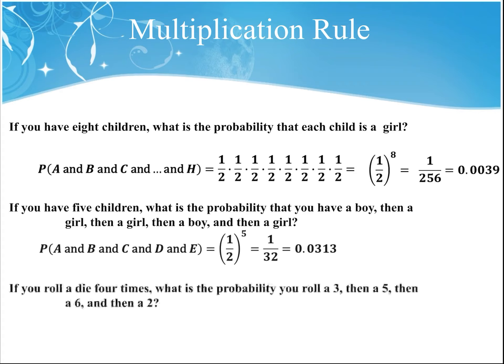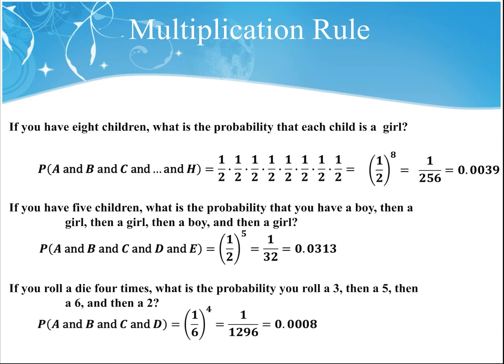If you roll a die four times, what is the probability that you roll a three, then a five, then a six, then a two? Each one of those has the same probability, which is one chance in six. So this probability is one-sixth multiplied by itself four times — one-sixth to the fourth — or 0.0008, a very small probability.